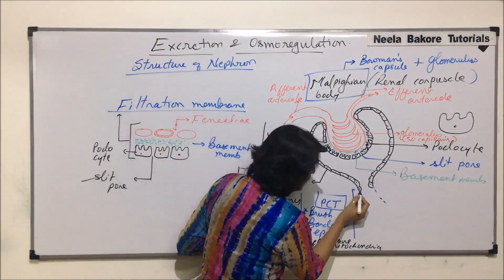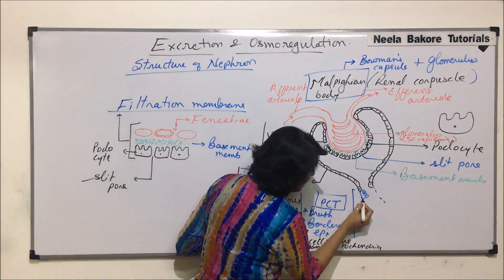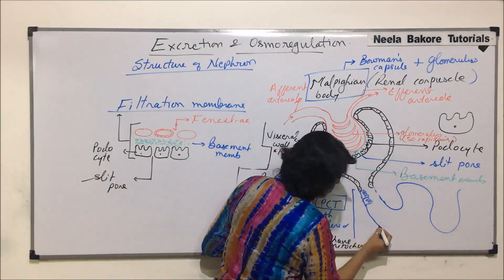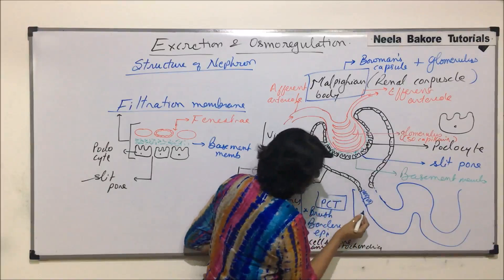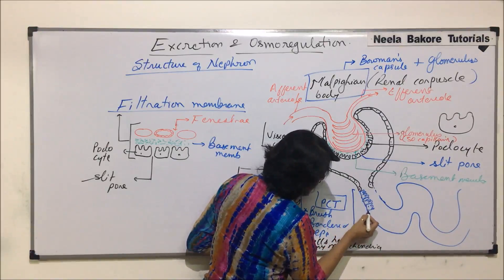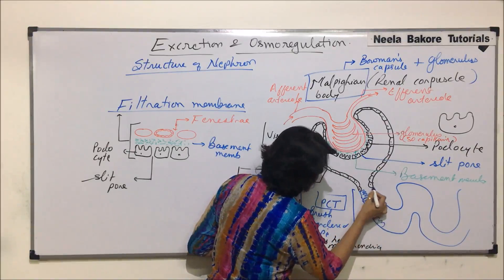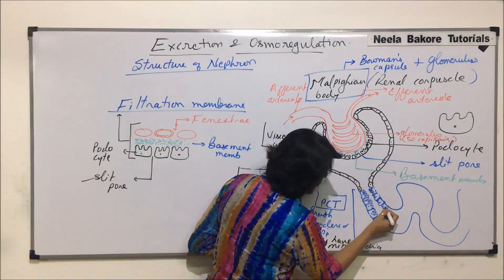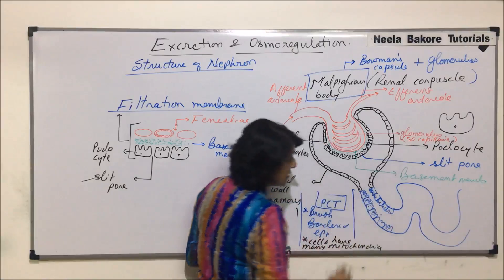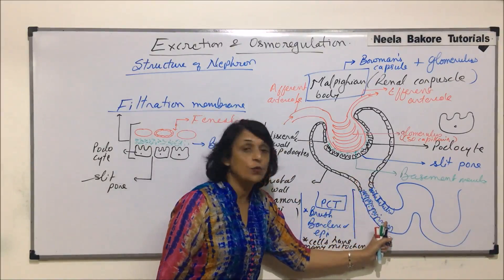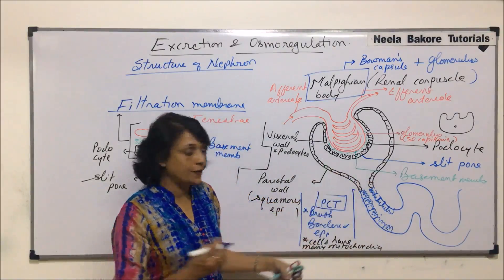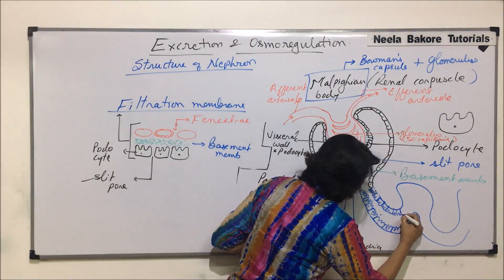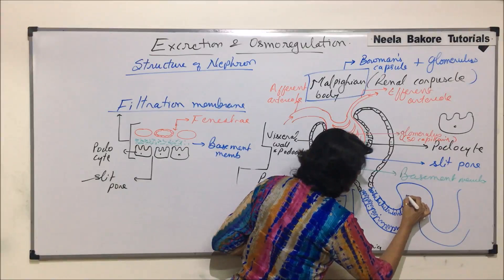Let us draw these cells here. These cells have microvilli, and that is why the epithelium looks like a brush border. The cells are drawn slightly coiled so we can show all those cells. These are all cells with microvilli on their free side. The lumen of PCT is in continuation with the lumen of the Bowman's capsule, the cavity which is there. The cells here are with microvilli.